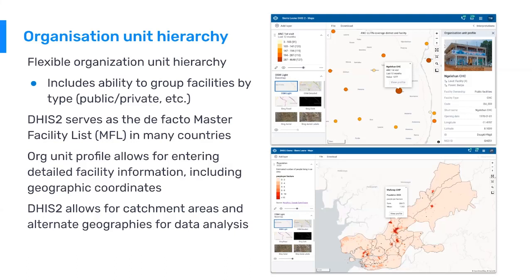And then you have under each one of those levels all of its component parts. So you have all of your facilities under one district, all of your districts under one province, all of your provinces under one region, and all of your regions under one nation. You can subdivide these org units into various different groups. So each health facility is an org unit, each district is an org unit, each province is an org unit, and the nation is one org unit. You can reorganize and reclassify these org units into different kinds of groupings — for example, all health facilities that are public or all health facilities that are private, even though they may not be in the same district or province.